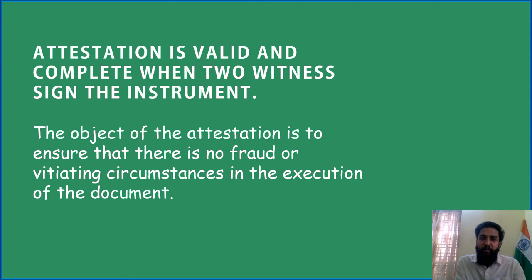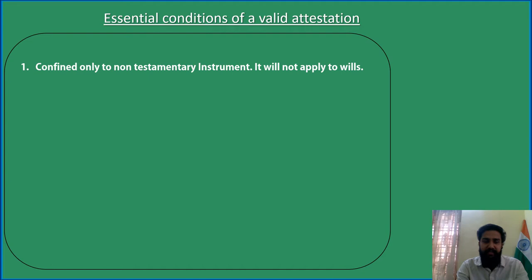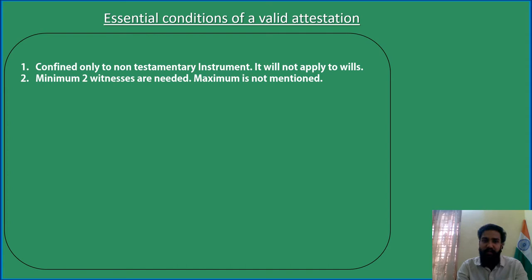Essential Conditions of a Valid Attestation. The first one: attestation is confined only to a non-testamentary instrument — it will not apply to Wills. Wills are known only after the death of the owner; before death, nobody knows who is actually getting the property, so attestation is not required for Wills. For every other document, attestation is required. The second condition: for attestation, we need two witnesses. The maximum number of witnesses is not mentioned. Three modes of attestation are recognized.